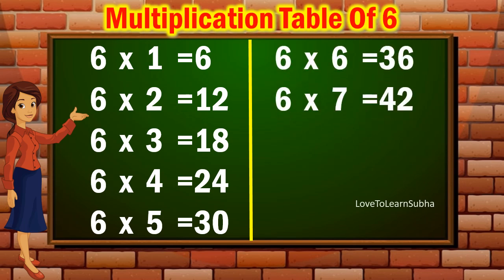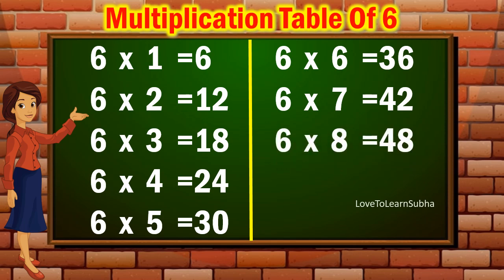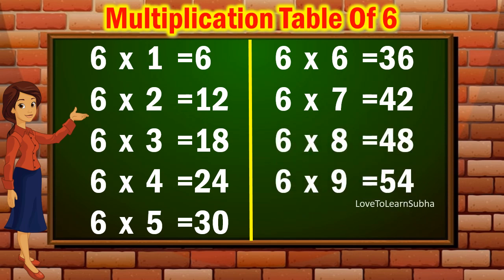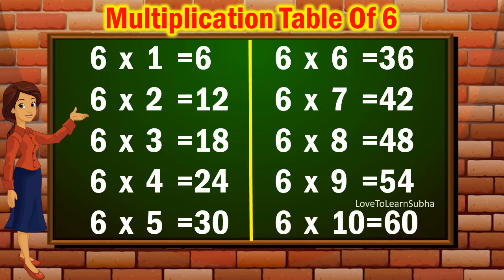6 sevens are 42. 6 eights are 48. 6 nines are 54. 6 tens are 60.